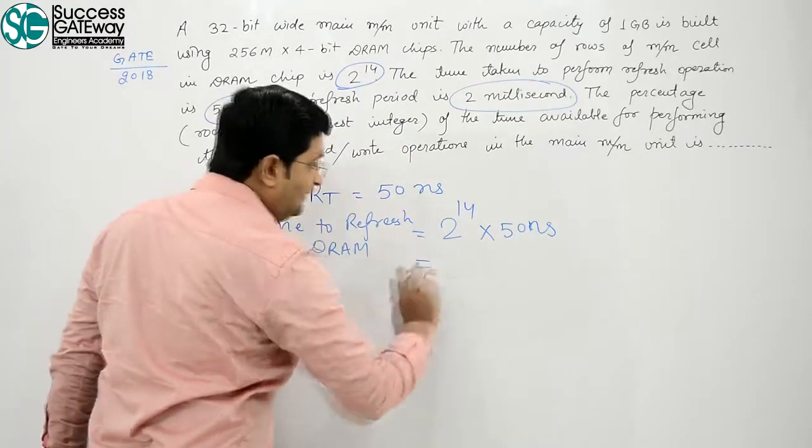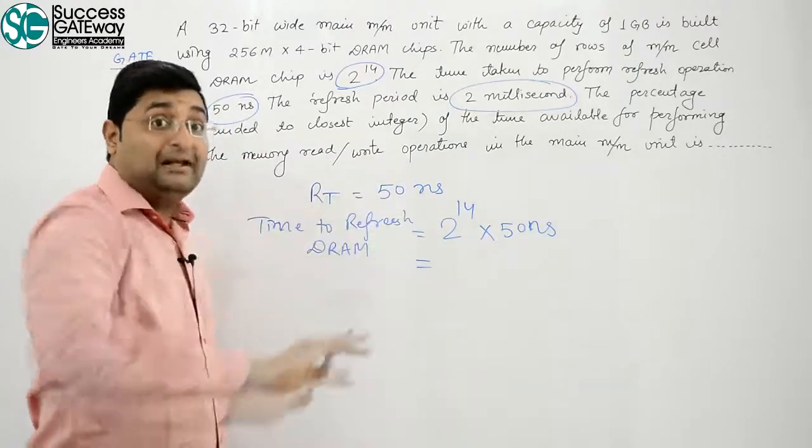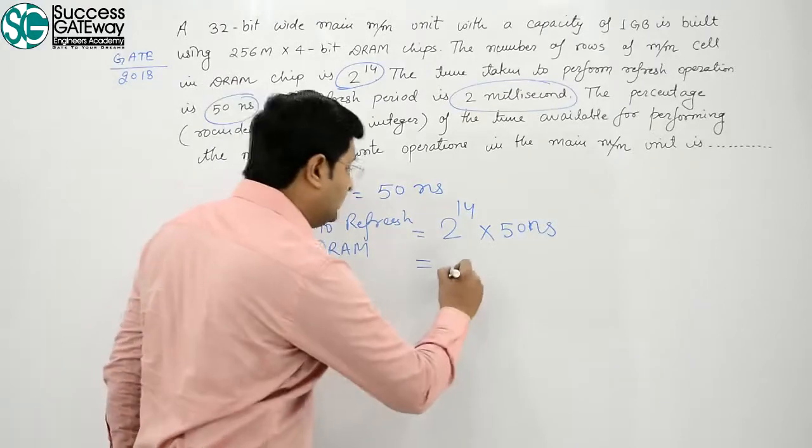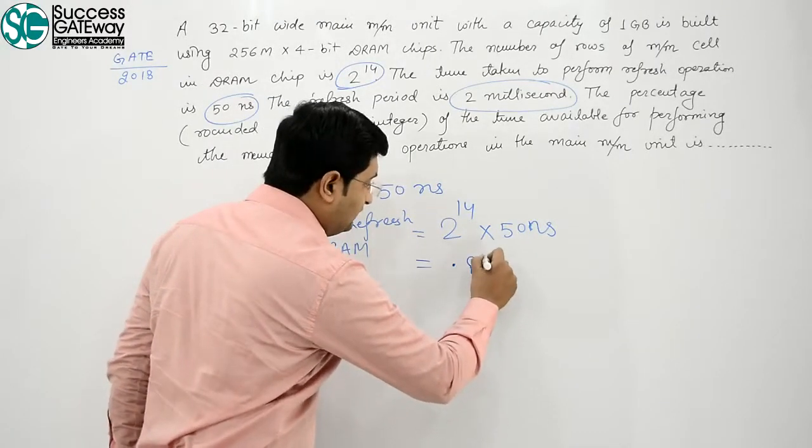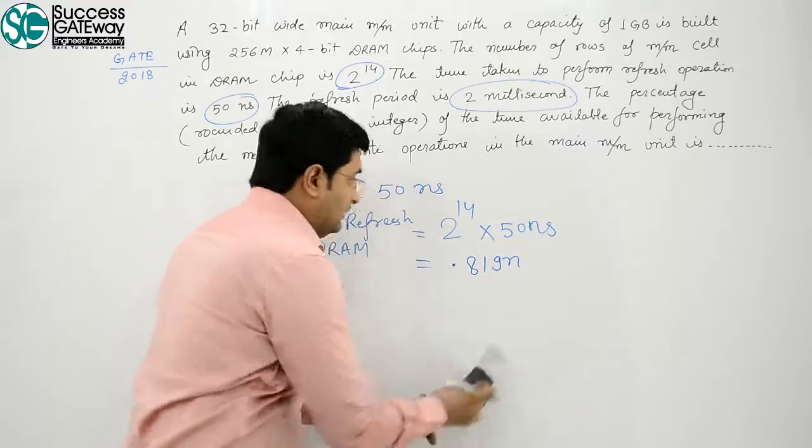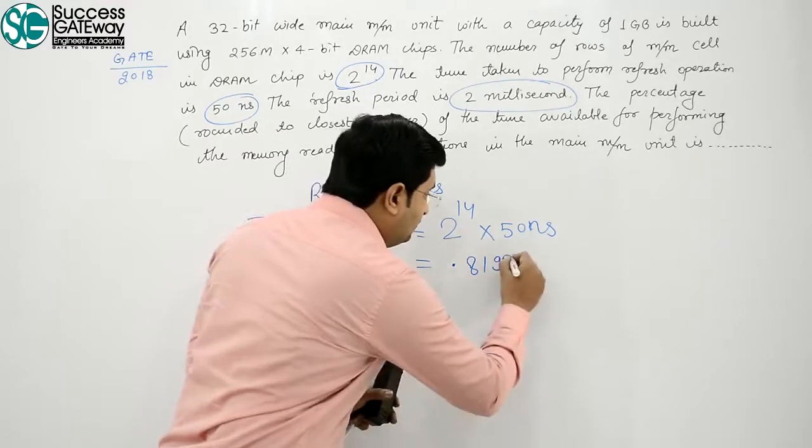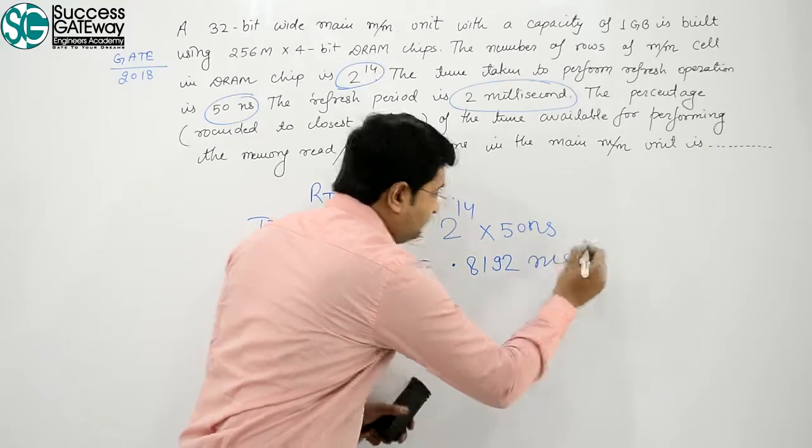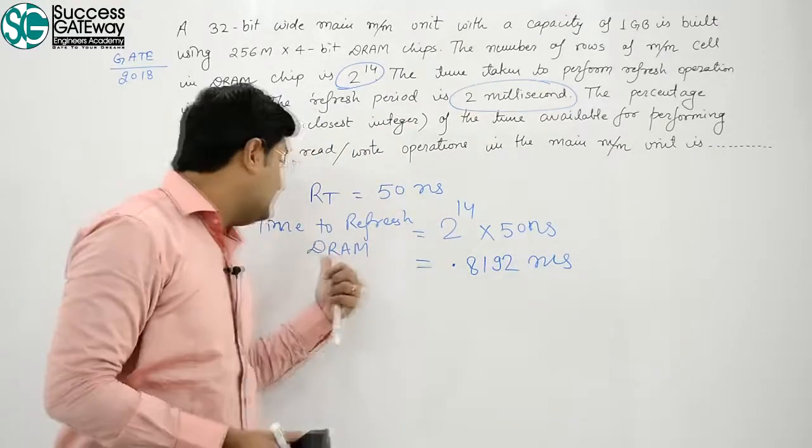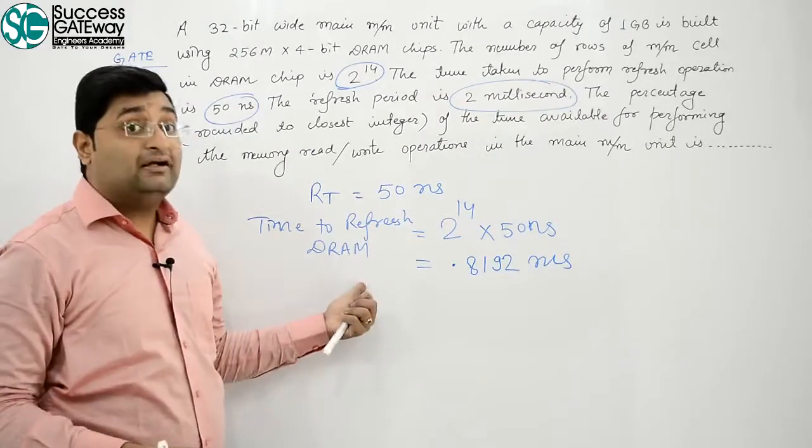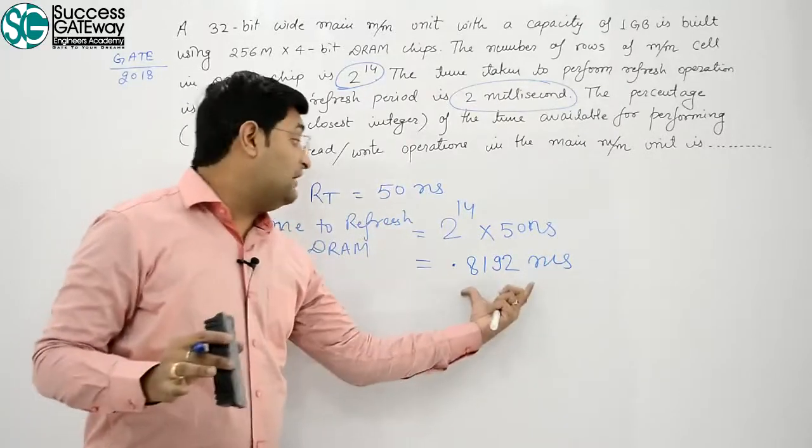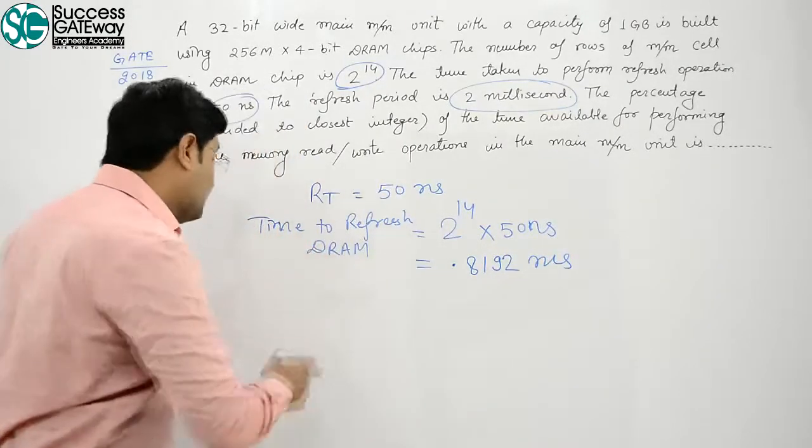If you convert this into millisecond, that is 0.8192 millisecond. Got the point? Now, 0.8192 millisecond is time to refresh one DRAM, and parallely hum log sari DRAMs ko refresh kar deengi ittai time mein.